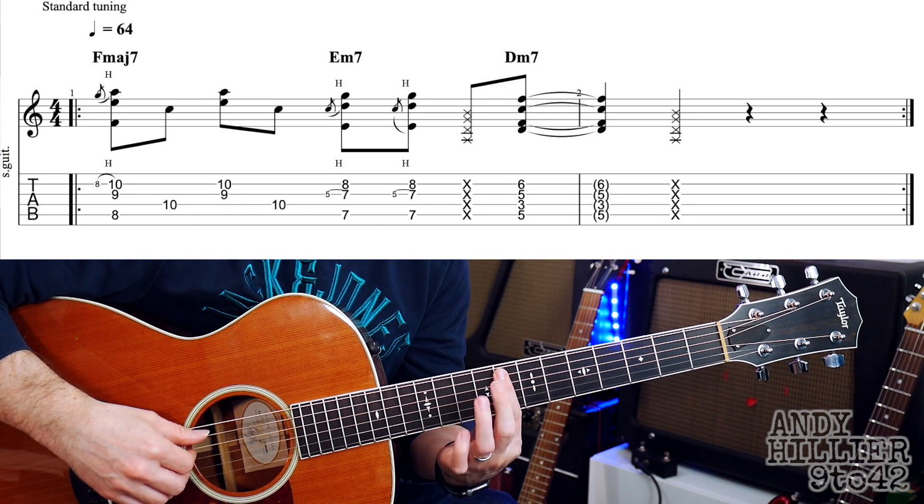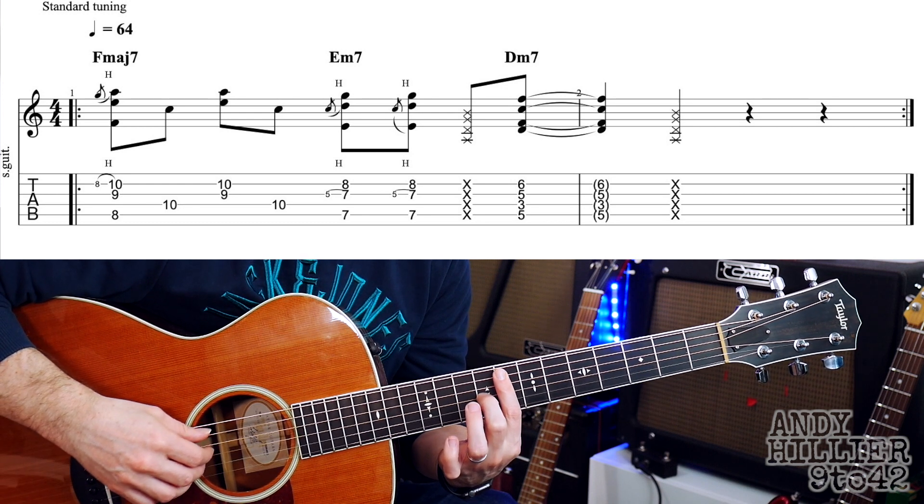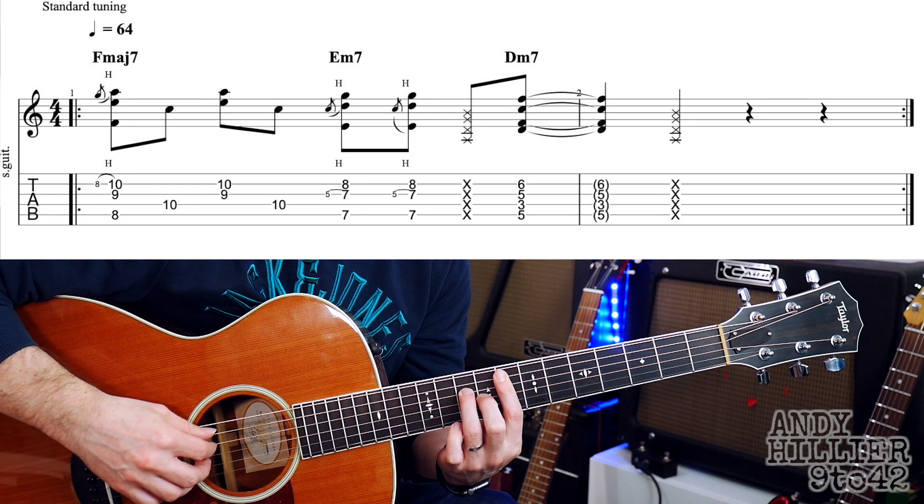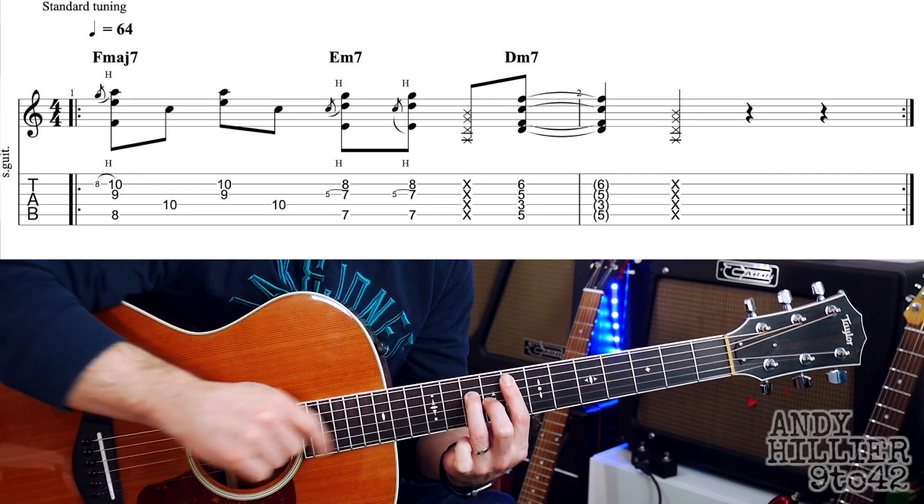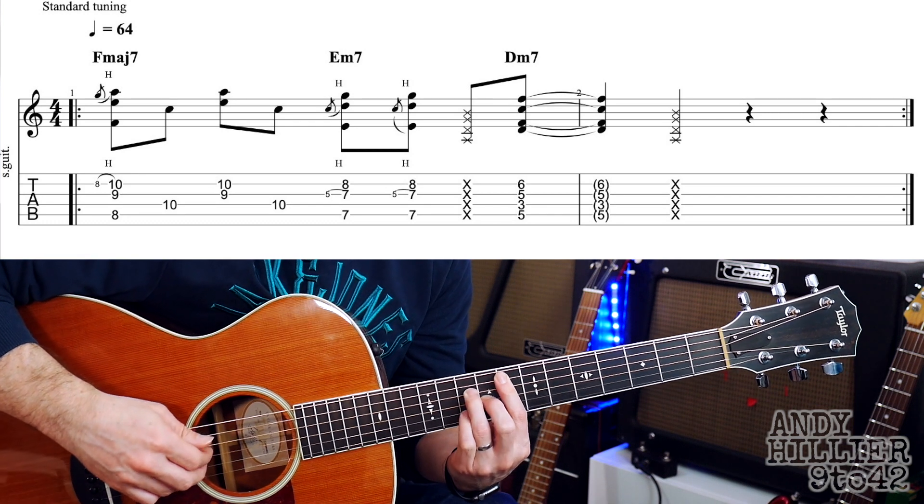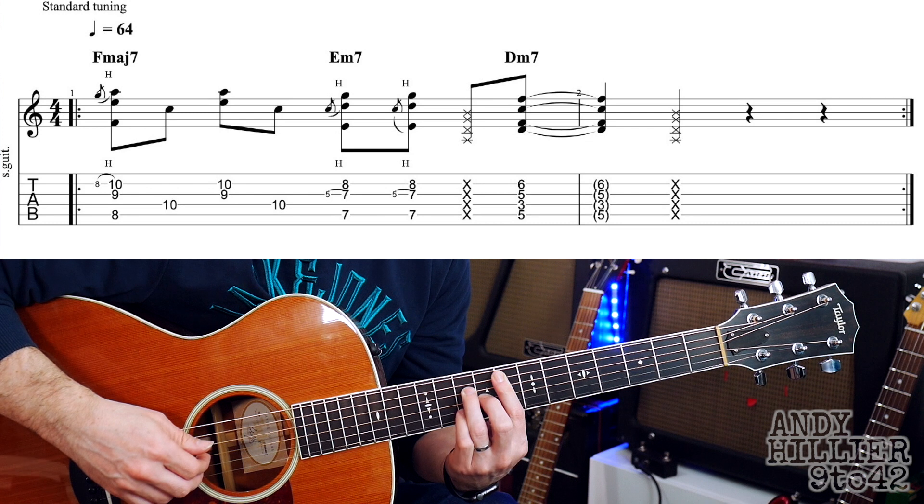So the 8th fret from the A string, second finger on G9, third finger on D10, and we're going to add our little finger onto B10.